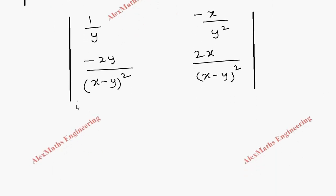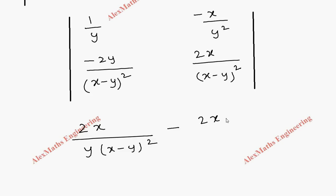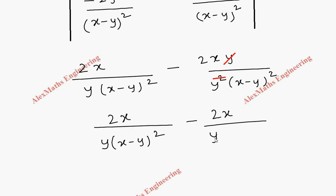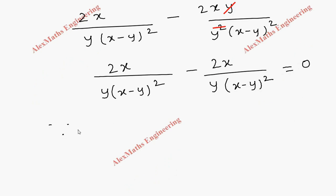Now we expand the determinant by multiplying the leading diagonal: (1/y) × (2x/(x−y)²) gives 2x / [y(x−y)²]. Then minus the other diagonal: (−x/y²) × (−2y/(x−y)²) becomes +2xy / [y²(x−y)²]. We can cancel one y, giving 2x / [y(x−y)²]. Both terms are equal and opposite, so they cancel and we get 0. Since ∂(u,v)/∂(x,y) = 0, u and v are functionally related.